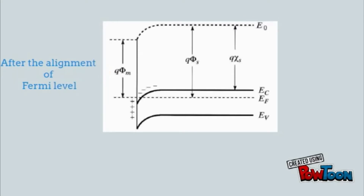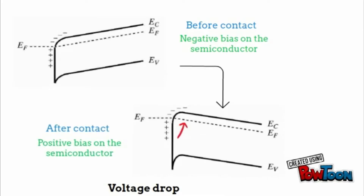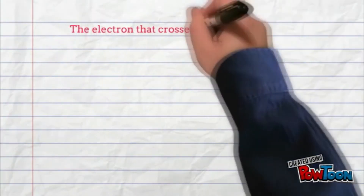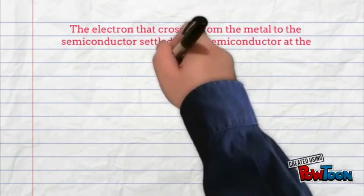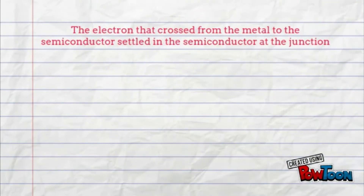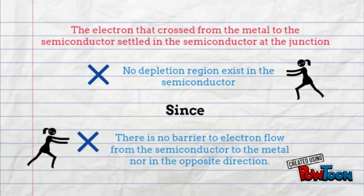After the alignment of the Fermi levels, a potential drop equal to φM minus φS is developed across the semiconductor, and that is why the energy bands in the semiconductor bend downwards at the surface. The electrons that cross from the metal to the semiconductor settle in the semiconductor at the junction. There is no depletion region in the semiconductor, as there is no barrier for the electrons to flow.